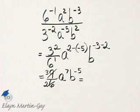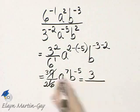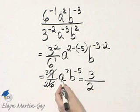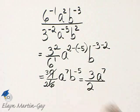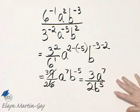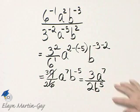And remember, we want to write with no negative exponents. So I'll write my 3 in the numerator, my 2 in the denominator. This a to the 7th I'll leave in the numerator. And this b to the negative 5, since I want to write it with a positive exponent, I'll move it to the denominator as b to the fifth. I can simplify no further. These are unlike bases, so I cannot combine them.